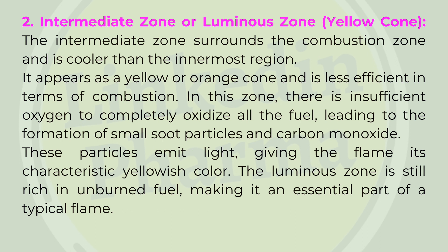2. Intermediate zone (luminous zone, yellow cone) — the intermediate zone surrounds the combustion zone and is cooler than the innermost region. It appears as a yellow or orange cone and is less efficient in terms of combustion. In this zone, there is insufficient oxygen to completely oxidize all the fuel, leading to the formation of small soot particles and carbon monoxide. These particles emit light, giving the flame its characteristic yellowish color. The luminous zone is still rich in unburned fuel, making it an essential part of a typical flame.